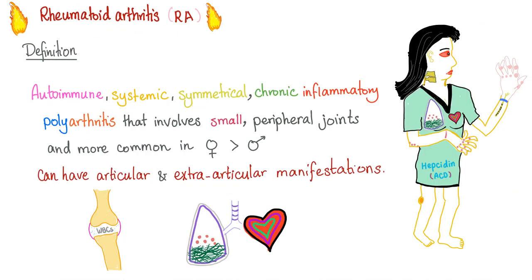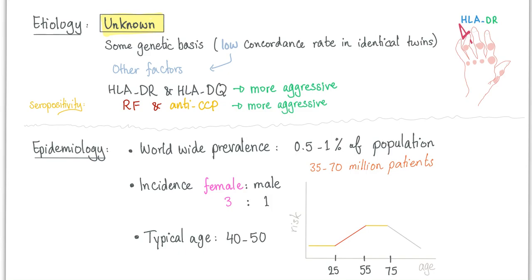Rheumatoid arthritis is an autoimmune, systemic, symmetrical, chronic inflammatory polyarthritis that involves small peripheral joints and is more common in females than males. It can have articular and extra-articular manifestations. The etiology is unknown — some genetic factors, some environmental factors, with an HLA-DR4 association. You'll find RF and anti-CCP; if either is positive, we call this seropositive rheumatoid. Typical age of presentation is 40 to 50.